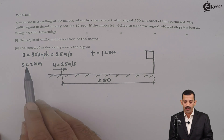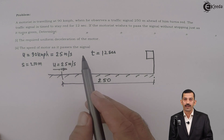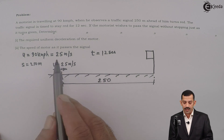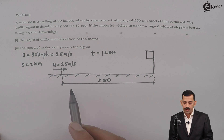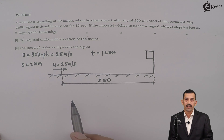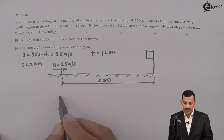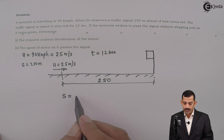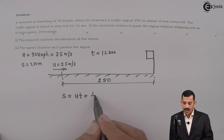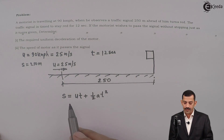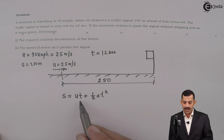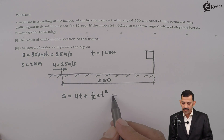So what we know: initial velocity U is known, time T equals 12 seconds is known, and displacement S equals 250 meters is known. Using this, we can find the acceleration. Using the equation S equals UT plus half A T squared, substituting: S is 250 meters, U is 25 meters per second, time is 12 seconds, and acceleration A is unknown.